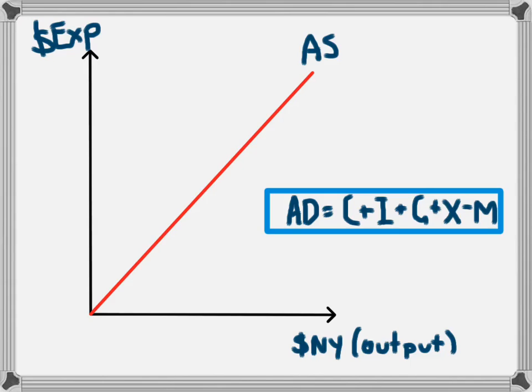C is consumption, and that is the spending by households or consumers. I is investment. For investment, we're going to use the economic definition. We're not looking at things like shares and bonds, but we're looking at spending by businesses on capital goods, which are goods that they use in the production of other goods.